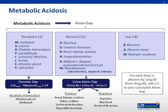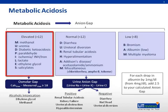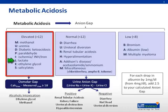Metabolic Acidosis. The first step in the differential diagnosis of metabolic acidosis is determining the anion gap. The mnemonic MUD PILES helps us remember the most common causes of elevated anion gap metabolic acidosis. Among these, the most common ones are uremia from renal failure, diabetic ketoacidosis, and lactic acidosis, usually as a result of severe hypotension.